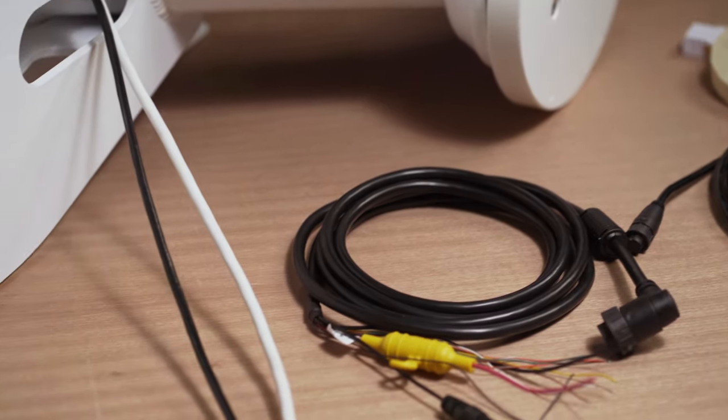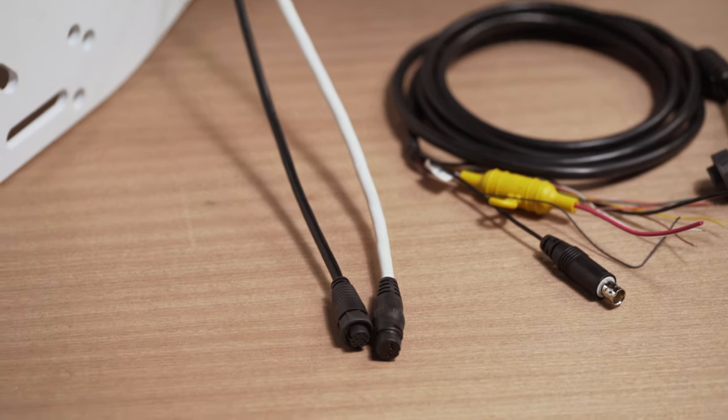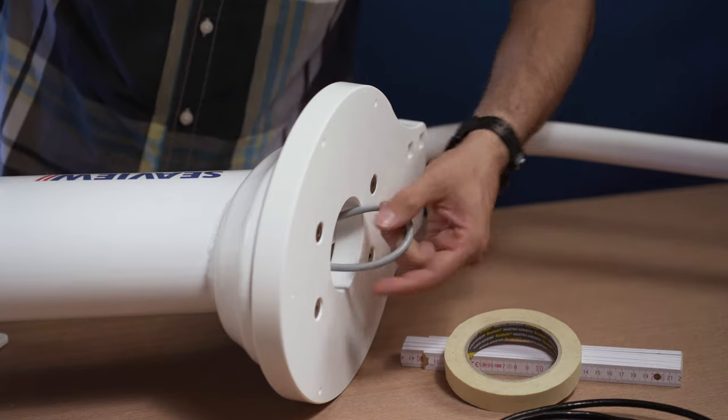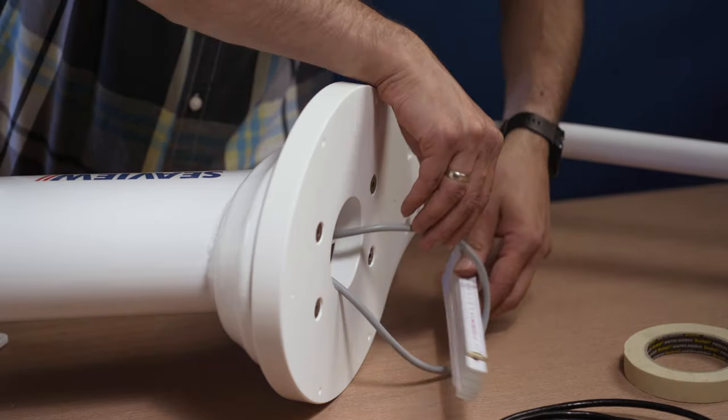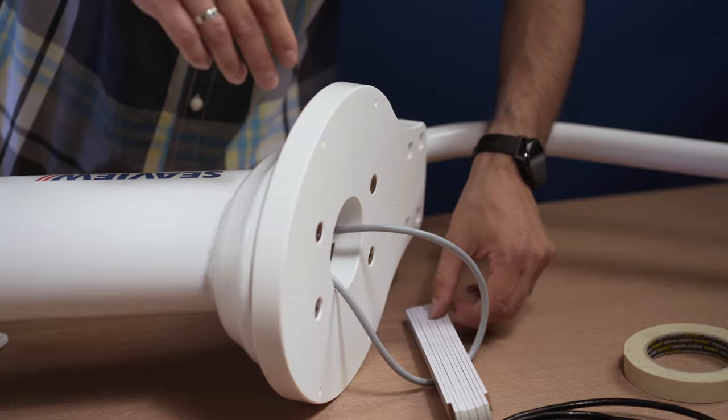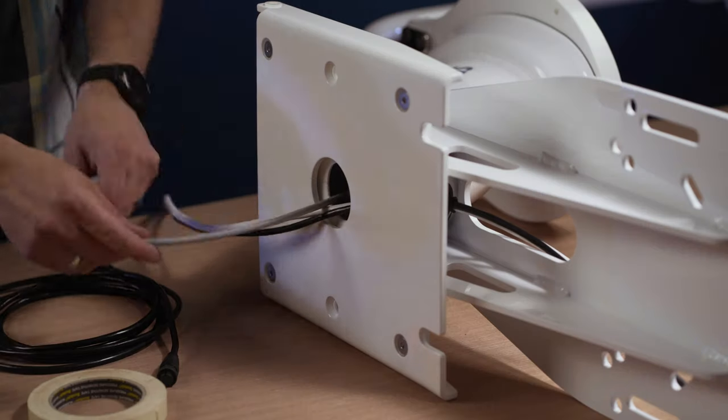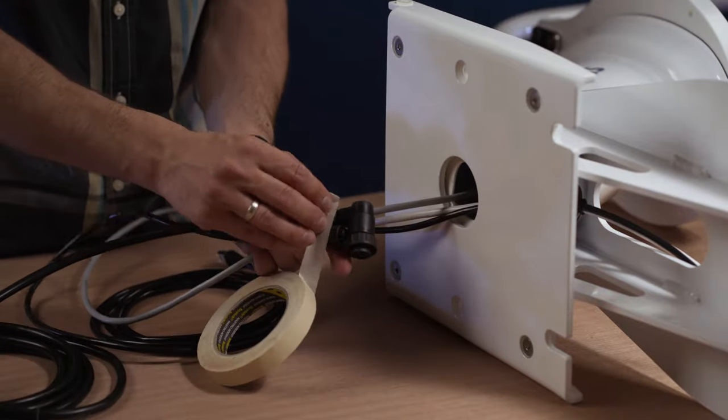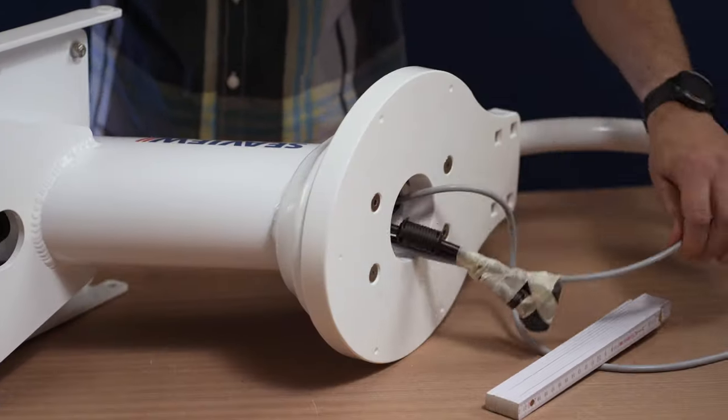To feed the camera power and data cable through the mount, use the anchor light power cable as a pulling aid. The ruler can be used as a safeguard to stop the cable being pulled back inside. Tape all the cables together again with masking tape and pull the bundle through the mount.